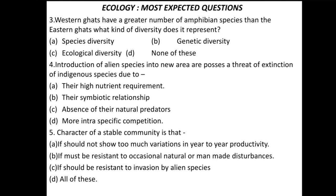Now we come to the third question. Western Ghats have a greater number of amphibian species than the Eastern Ghats — what kind of diversity does this represent? This is one of the most important questions. Four options are given: species diversity, genetic diversity, ecological diversity, and none of these. The correct option is species diversity.